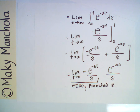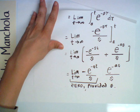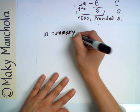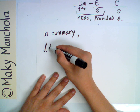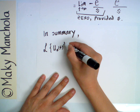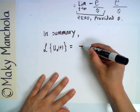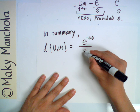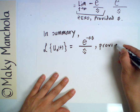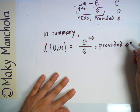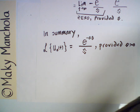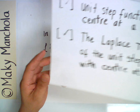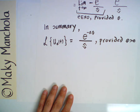In summary, we can say that the Laplace transform of the unit step function u_A(T) is e^(−AS) over S, provided S is greater than zero. We have now found the Laplace transform of the unit step function with center at A greater than zero, and we can add this to our list of Laplace transforms.